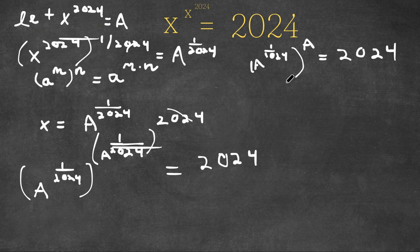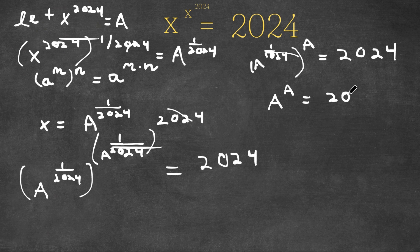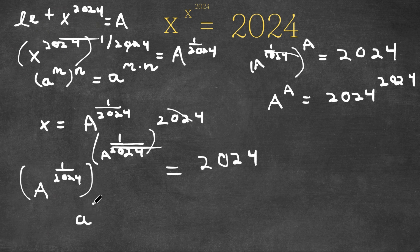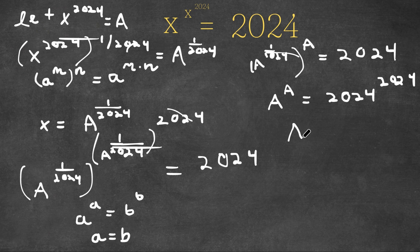Now, if I take the power of 2024 on both sides, then this would make these two cancel out, and I would simply get a to the power of a is equal to 2024. If we have something in the form a to the power of b, this means that a is equal to b. So in this case, this means that a is equal to 2024.